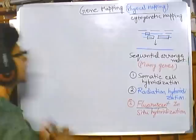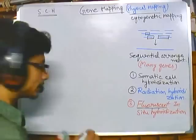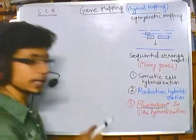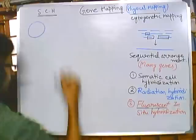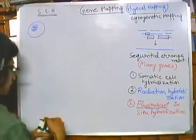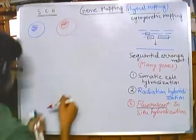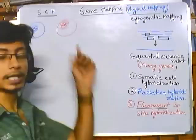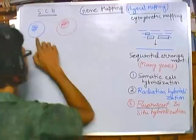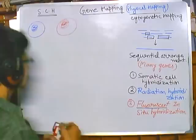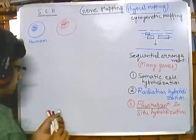In somatic cell hybridization, as the term suggests, cells are hybridized. We have two somatic cells — the blue color cell is from a human being and the red color cell is from a rodent or mouse.